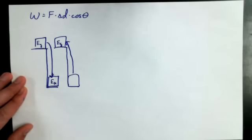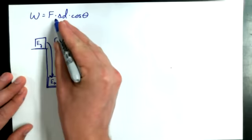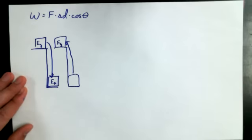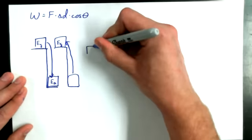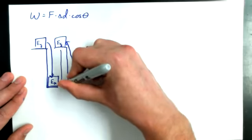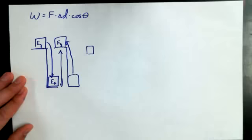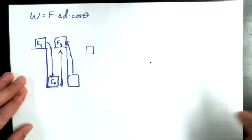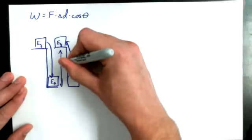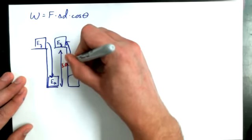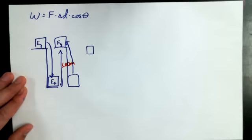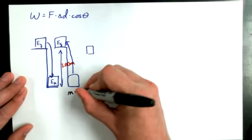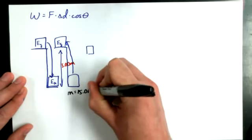So let's talk about how much work it takes to lift an object up to a height. Work equals force times displacement times cosine of theta. And I want to draw a free body diagram. Let's say that this particular cliff or ledge or whatever it is has a height of 5.00 meters. And let's say that this particular object has a mass of 15.0 kilograms.